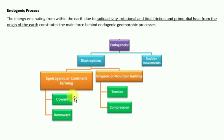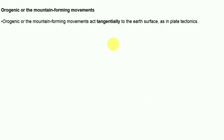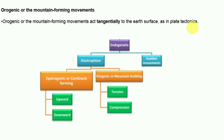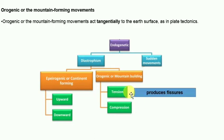The second type of diastrophism is orogenic or mountain building, caused by two forces: tension and compression. Orogenic movement acts tangentially to the earth's surface, as in plate tectonics. Tension produces fissures and compression produces folds.